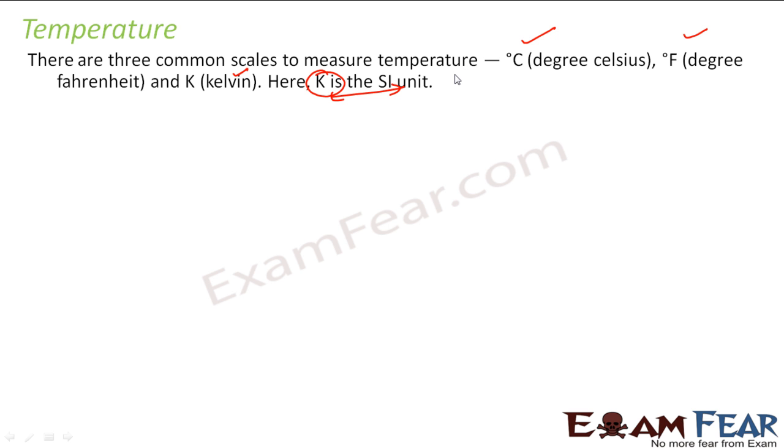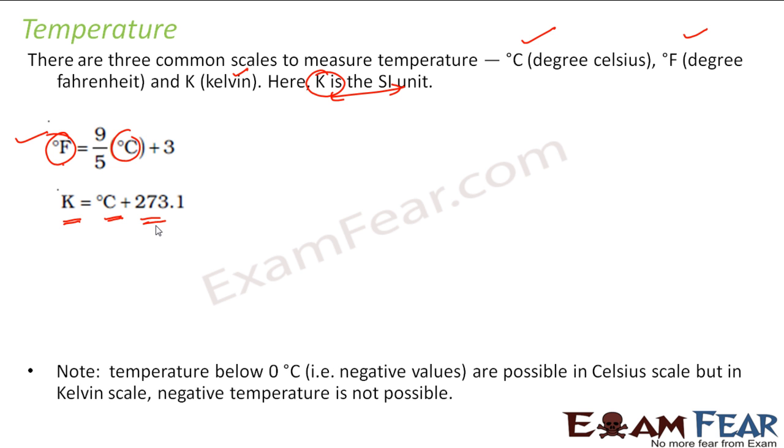Kelvin is the SI unit. The formula to convert from Fahrenheit to Celsius is: Fahrenheit is 9 by 5 into C plus 32, and Kelvin is - you have C in degree Celsius, you add 273.15. Please note, temperature below 0 degree Celsius negative values are possible in Celsius scale, but it is not possible in Kelvin scale.